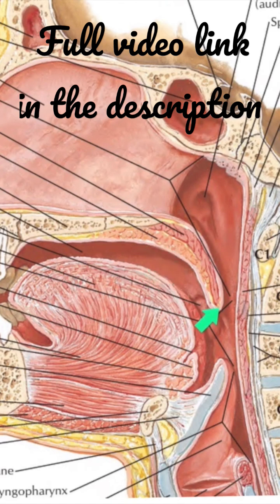This is the lower border, which is free and presents in the middle a conical projection — that is the uvula.